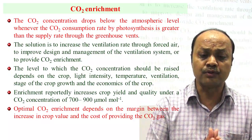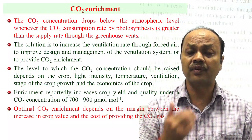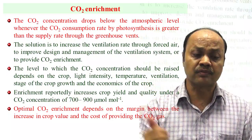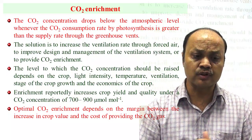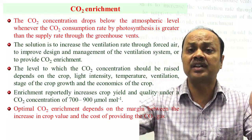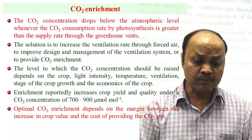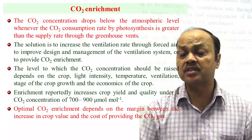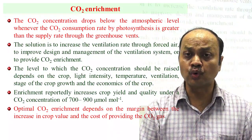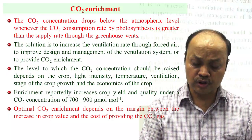CO2 enrichment — artificially supplying CO2 — will affect photosynthesis if all other parameters are within range. CO2 concentration drops below atmospheric level when the CO2 consumption rate by photosynthesis exceeds the supply rate through ventilation. For each crop there is a certain optimal CO2 range. The optimum CO2 enrichment depends on the margin between the value of increased crop yield and the cost of providing the CO2 — cost economics is very important.